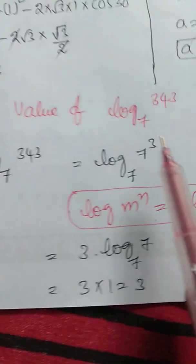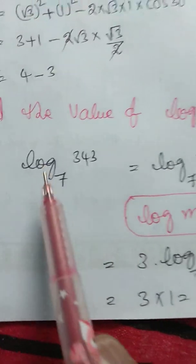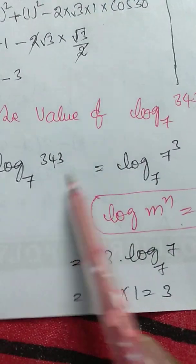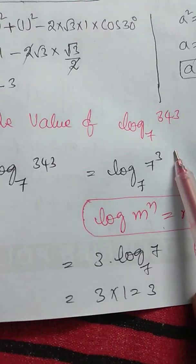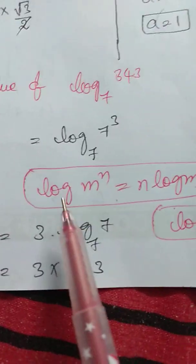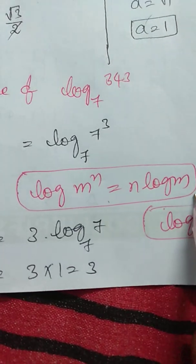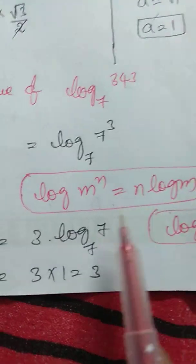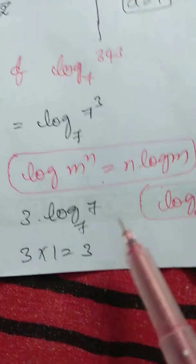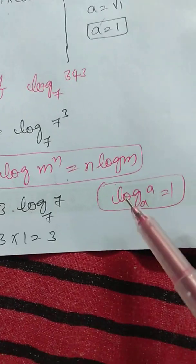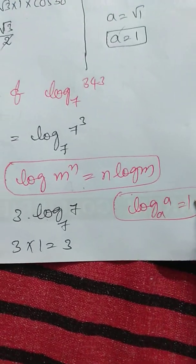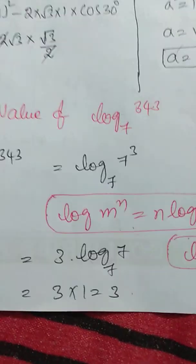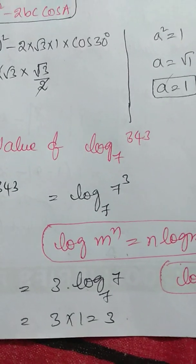Last problem: find the value of logarithm of 343 to the base 7. Using LCM, 343 can be written as 7 cubed. By the logarithm property: log(M^N) equals N into log M. So log₇(7³) equals 3 into log₇(7). Since log₇(7) equals 1, the answer is 3 into 1 equals 3. Therefore, log₇(343) equals 3. This is the required solution. Prepare very well. Thank you.